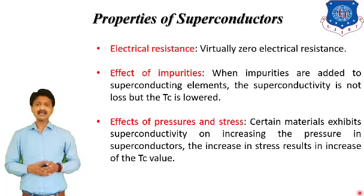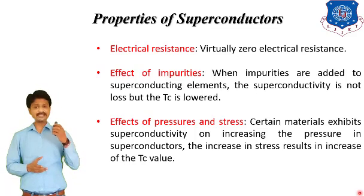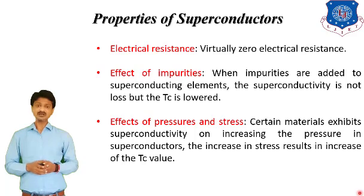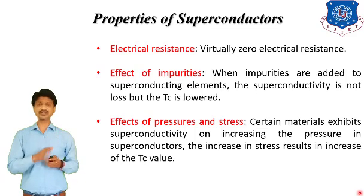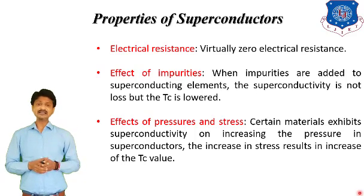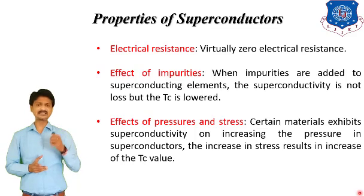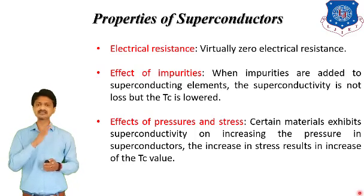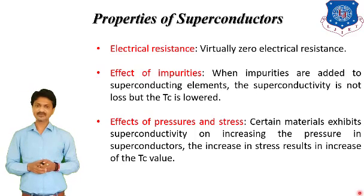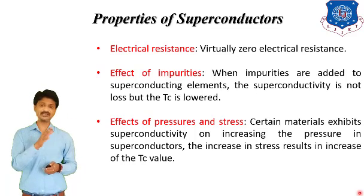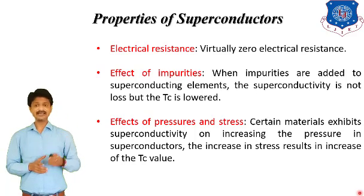The third property is the effect of pressure and stress. Certain materials exhibit superconductivity on increasing pressure. If we increase stress, it results in an increase in the value of the critical temperature. So increasing pressure in certain materials causes them to exhibit superconducting properties, and increasing stress raises the critical temperature.